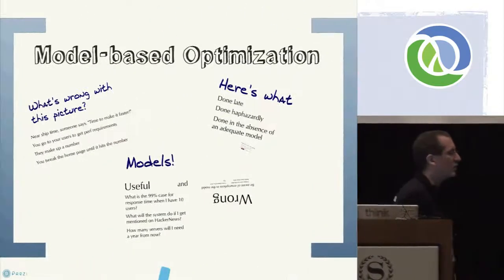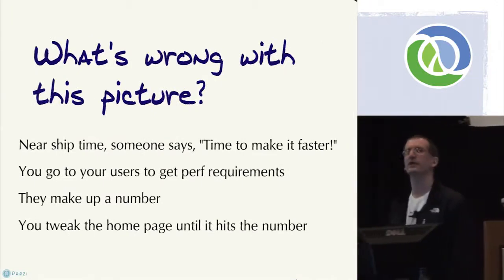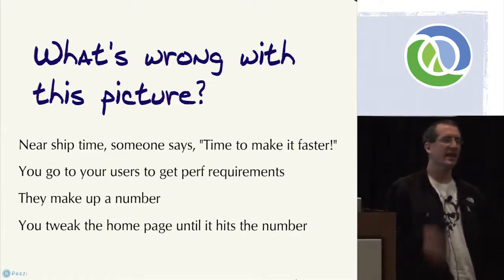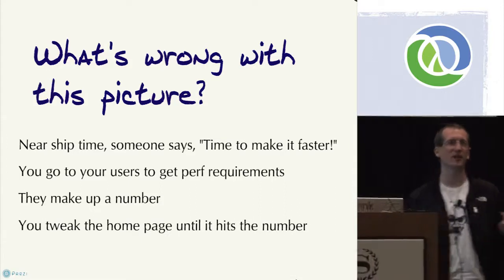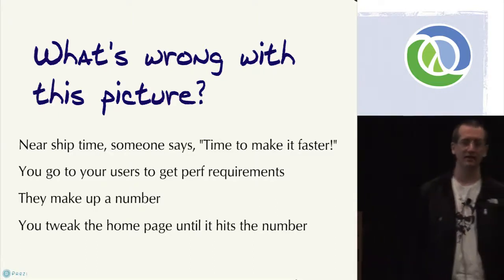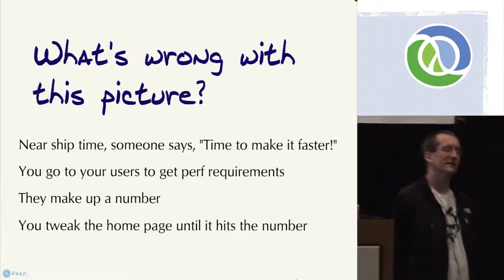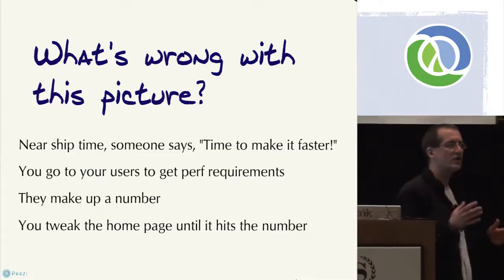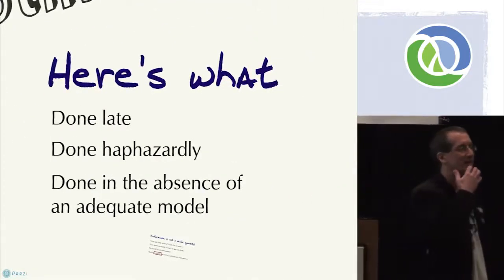I want to start with a little story. Tell me if this sounds familiar: you are working on a project, you get to the very end, it's a couple weeks from delivery, and someone says 'hey, it's time to make it faster.' You go to the user and say 'so how fast does it need to be?' and they say 'three.' You go to the home page, measure it, and pretty soon the home page is returning in three — light years or whatever — and then you're done and you ship.